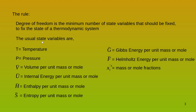What are the usual state variables that chemical engineers encounter? Temperature, pressure, volume per unit mass or mole, internal energy per unit mass or mole, enthalpy per unit mass or mole, entropy per unit mass or mole, Gibbs free energy per unit mass or mole, Helmholtz free energy per unit mass or mole, and the mole fractions in any phase.